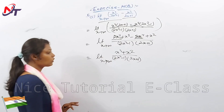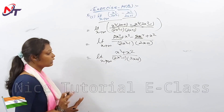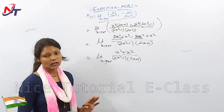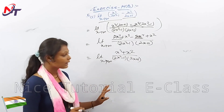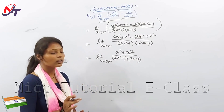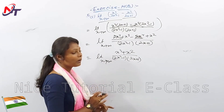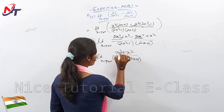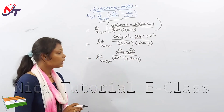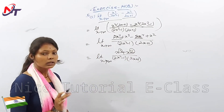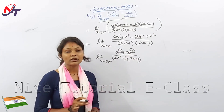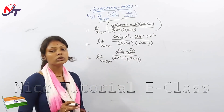Then what do we do? We find the highest power. What is the highest power in the numerator? It is 3 — so x³. We divide both numerator and denominator by the highest power, which is x³.